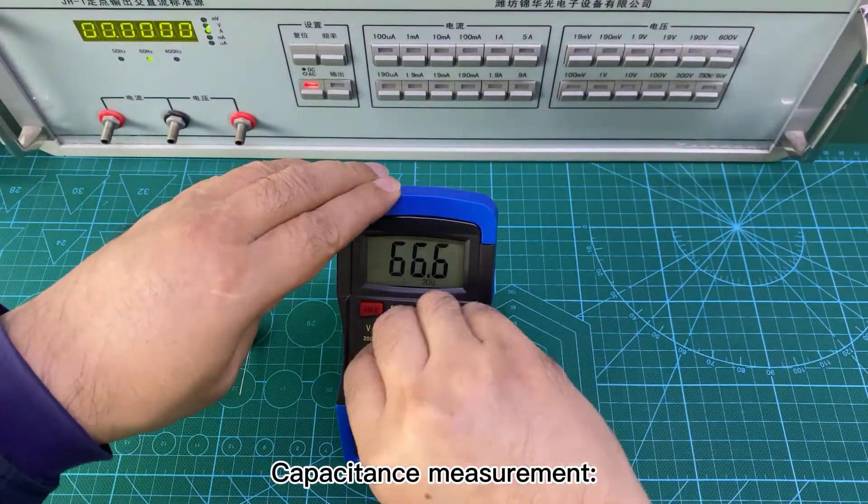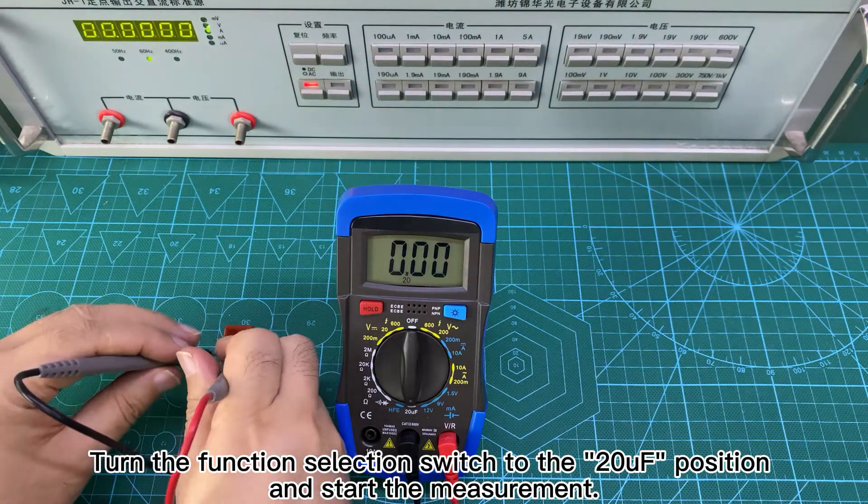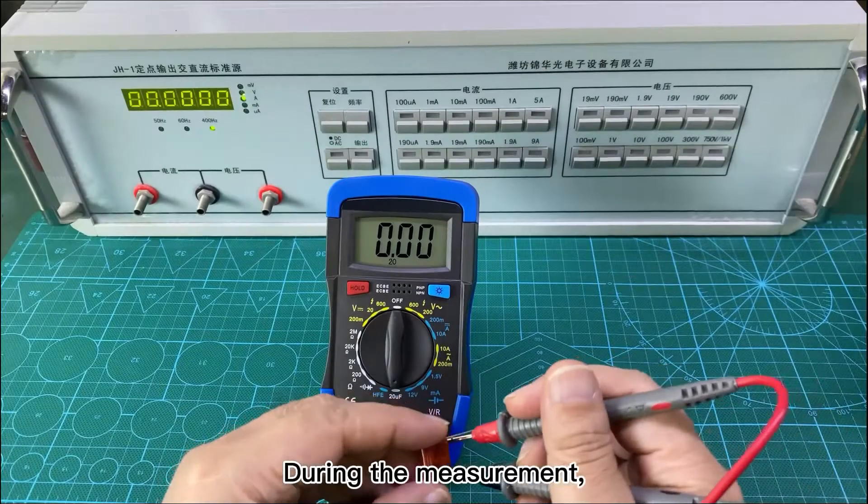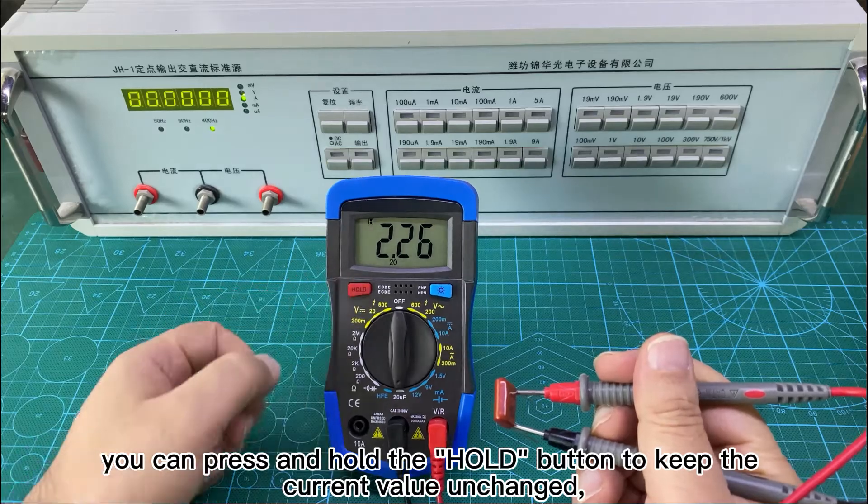Capacitance measurement. Turn the function selection switch to the 20F position and start the measurement. During the measurement, you can press and hold the hold button to keep the current value unchanged.